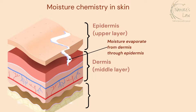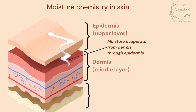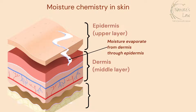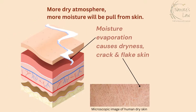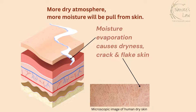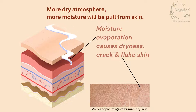Moisture evaporates from the skin, from the dermis through the epidermis. This is a continuous process called water loss from the skin. In winter, the atmosphere is dry. The more dry the atmosphere, the more water loss from the skin. And this water loss causes cracked and flaky skin.